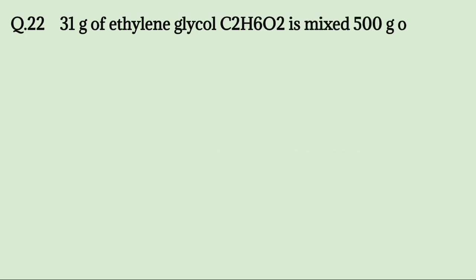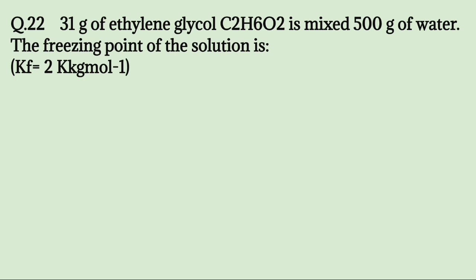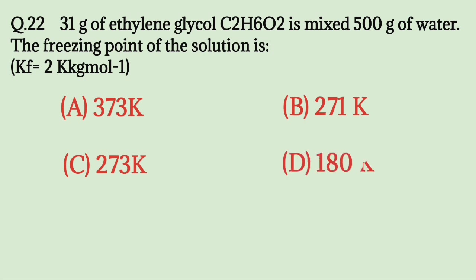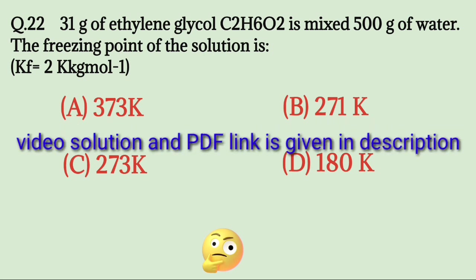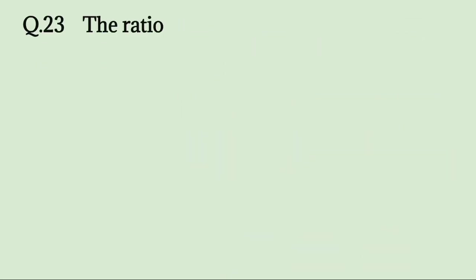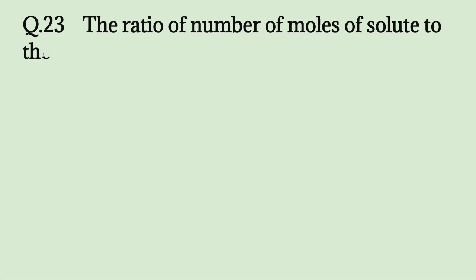31g of ethylene glycol is mixed with 500g of water. The freezing point of the solution is: A. 373K, B. 271K, C. 273K, D. 180K. Try to solve it. The correct answer is 271K.